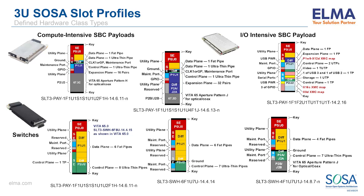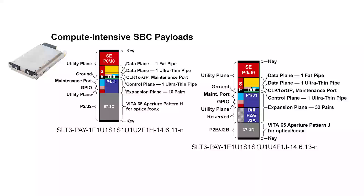Starting in the upper left corner, we find the Compute Intensive SBC or Primary Payload Profile. This is the workhorse of the SOSA profiles, containing a large 8-lane expansion plane along with an aperture for blind-mate optical or coaxial connectivity. Moving to the right, we have the secondary payload profile, which increases the expansion plane to 16 lanes while shrinking the blind-mate aperture to half size.